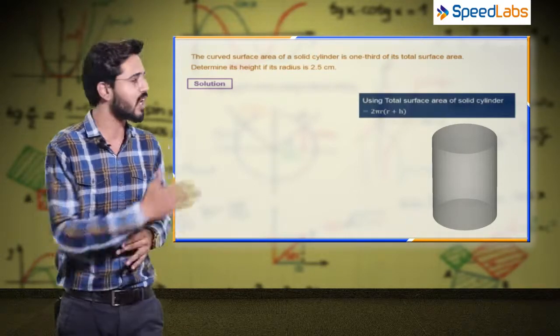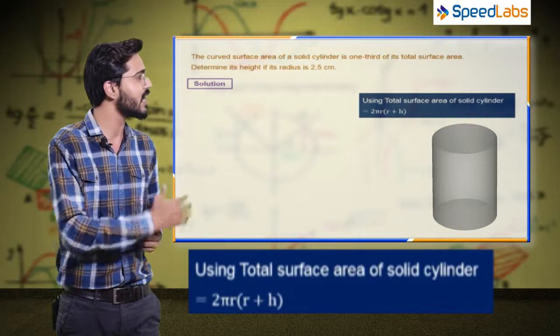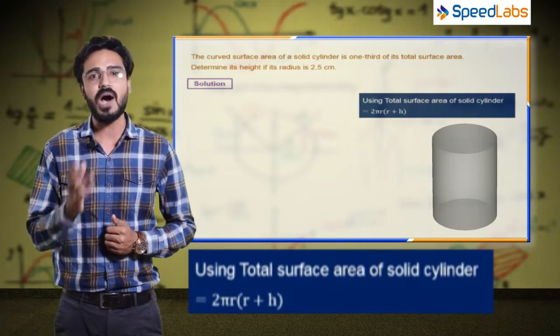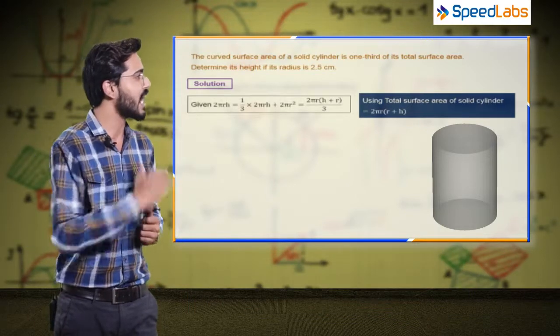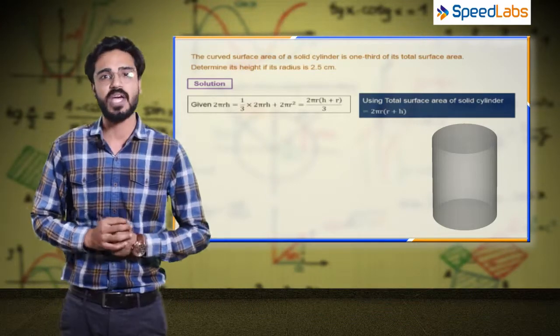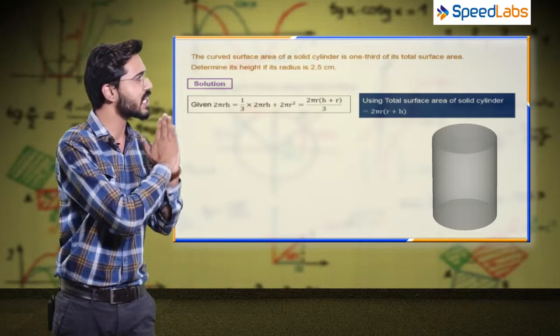The curved surface area of a cylinder is 2πrh and the total surface area of a cylinder is 2πrh plus 2πr². So the first information is used in the question given.